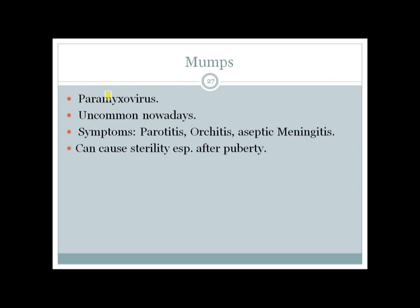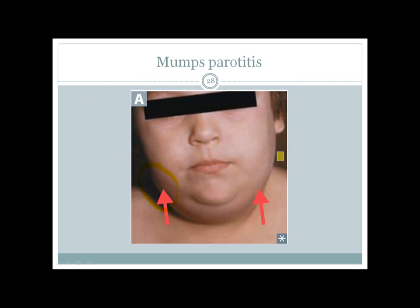Mumps is another Paramyxovirus, now uncommon due to the MMR vaccine. If it infects a person it first presents as parotitis. In male children it can cause orchitis; in female children it can cause oophoritis. It can also cause aseptic meningitis. Bilateral orchitis in a child can cause sterility, especially after puberty.